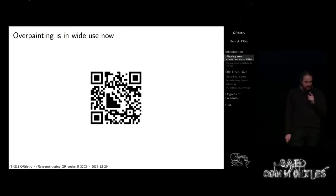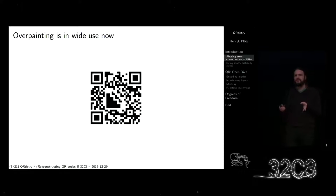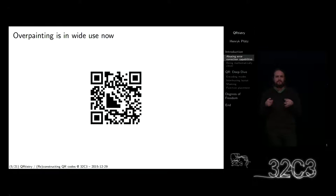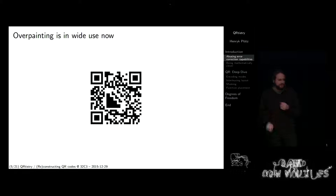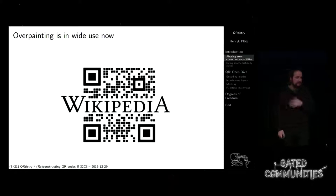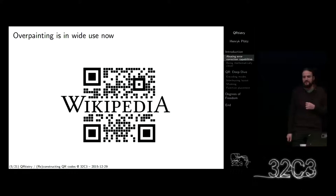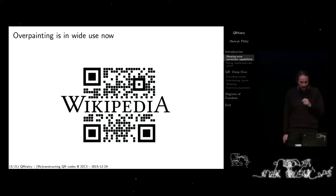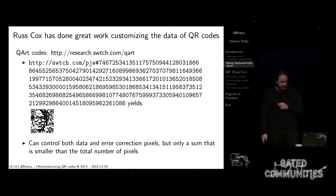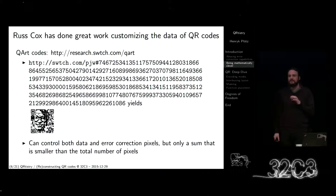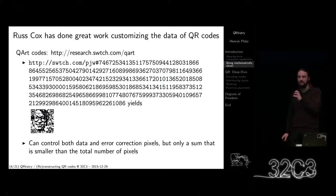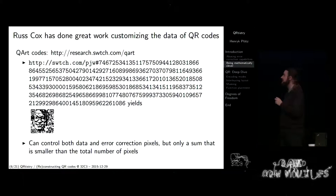In meinen Tools könnte man den Original-Code angucken. Ein anderes Beispiel — ich zeige nicht so viele Beispiele, weil das unerwünschte Werbung wäre, aber das zeige ich. Das ist Wikipedia. Die machen auch einen Code mit drüber malen. Die andere Möglichkeit, um das so zu machen, ist das Projekt QR von Russ Cox.